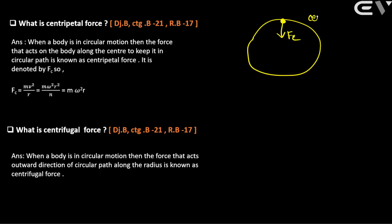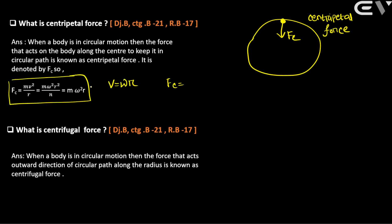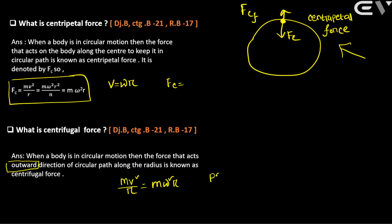Centripetal force is directed toward the center. The formula is mv² by r, or equivalently mω²r, since v equals ωr. Centrifugal force is the outward direction force with the same magnitude — mv² by r, or mω²r — but it is a pseudo force. That is the definition and formula for centripetal and centrifugal force.